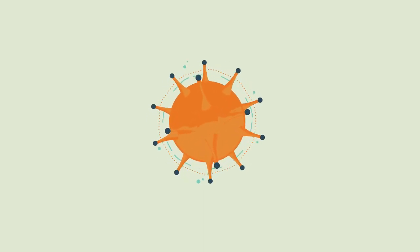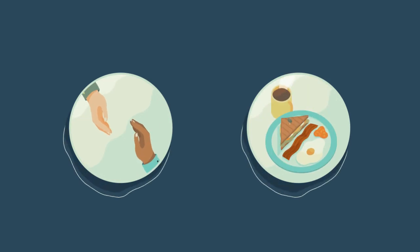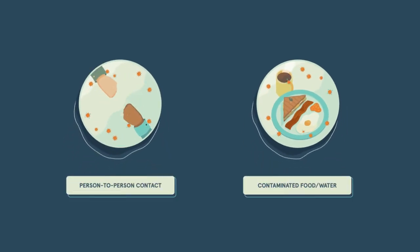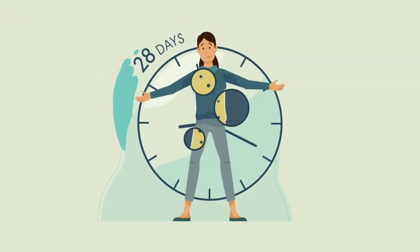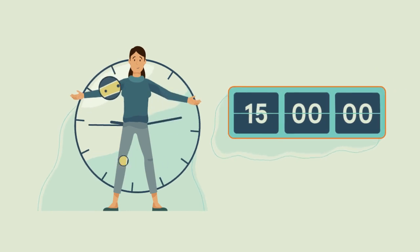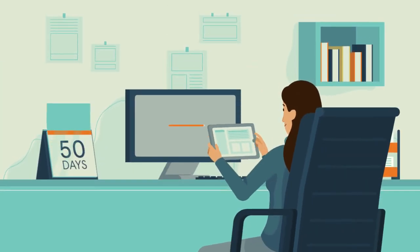Hepatitis A is a vaccine-preventable disease that is transmitted either through person-to-person contact or contaminated food or water. Symptoms typically begin about 28 days after infection, but can show up as early as 15 days, or as late as 50 days after exposure.